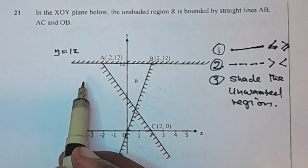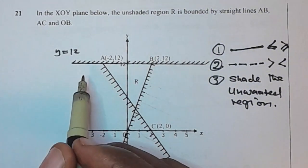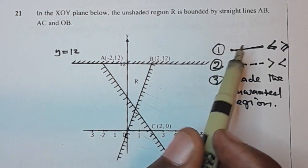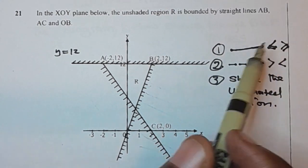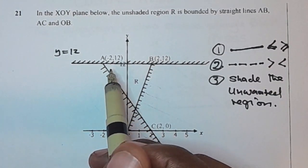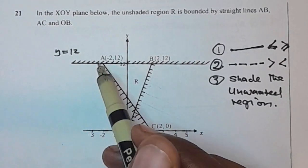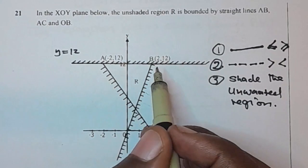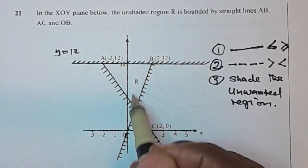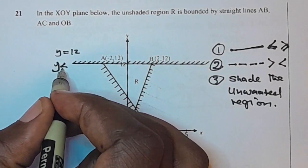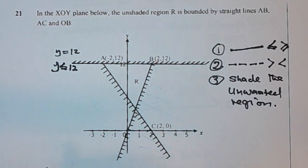What about the inequality for this line? First, ask yourself: is the line full or dotted? You can see this line is a full line, so the inequality will have either less than or equal to, or greater than or equal to. The second question: which side is the unwanted or shaded region? The greater part is the unwanted region, so the wanted part is the less part. Therefore, the inequality is y less than or equal to 12.